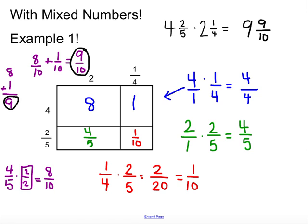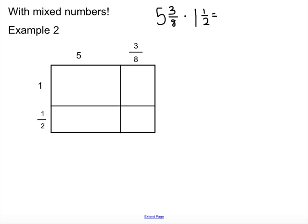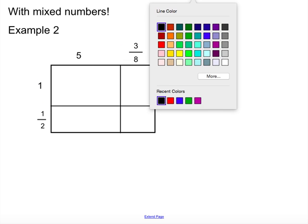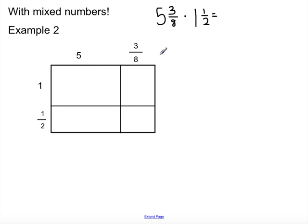So, we will do another example. Example number 2. We have 5 and 3 eighths times 1 and 1 half. And again, I've already set up the problem. We have 5 and 3 eighths. We have 1 and 1 half. And we'll start here. 5 times 1 is pretty simple. 5.